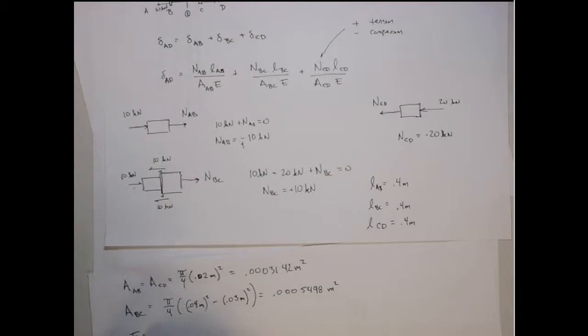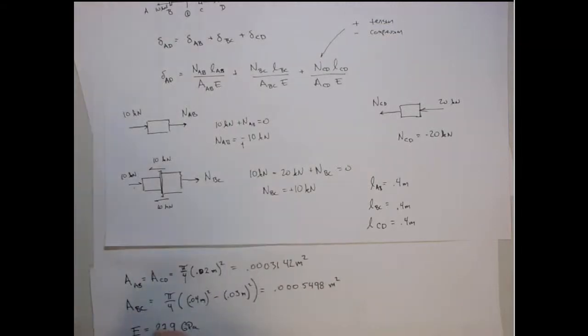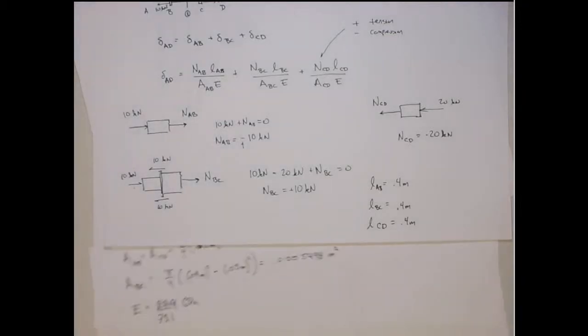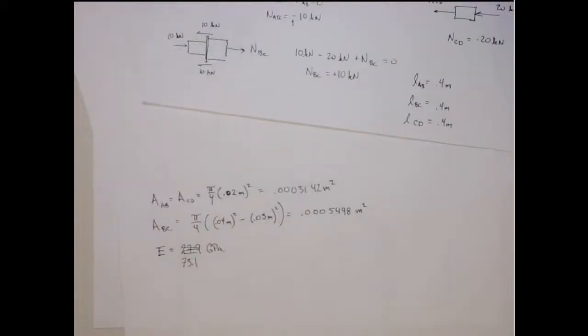It's aluminum. So Young's modulus for aluminum is, I should remember this now, right? It's the 27.9 gigapascals, right? I think that's it. 29.7 or 27.9. I can never remember. Oh, it's not even close. It's 73.1. I'm sorry. I should remember that. I'm going off the screen. All right. So now we can put all that stuff together.